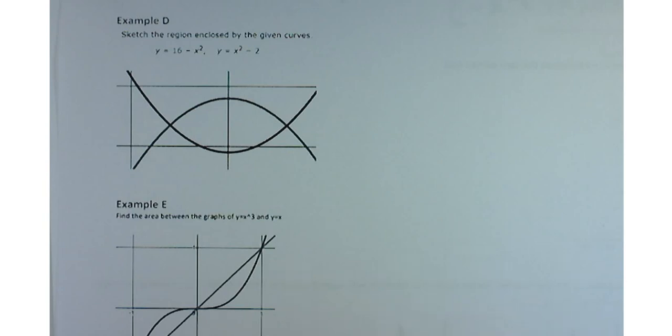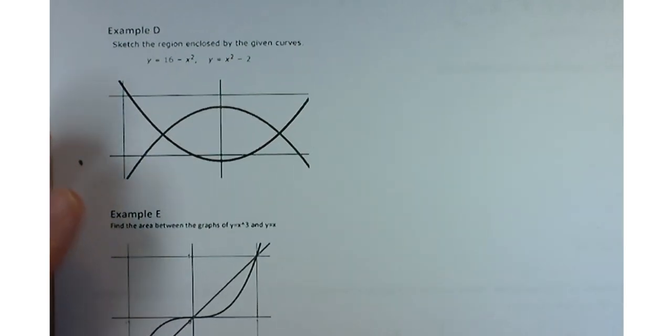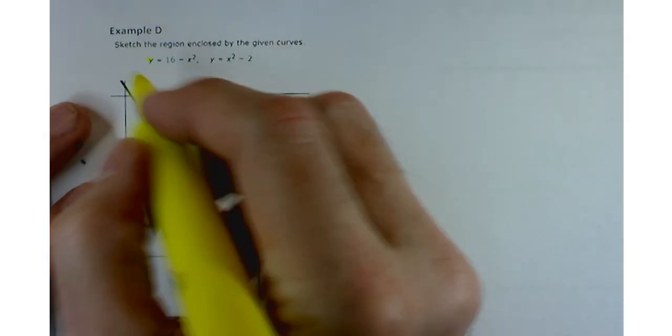All right, so we're going to continue trying to find the area between two curves. In this particular case, we've got y equals 16 minus x squared, and x squared minus 2 is our two functions.